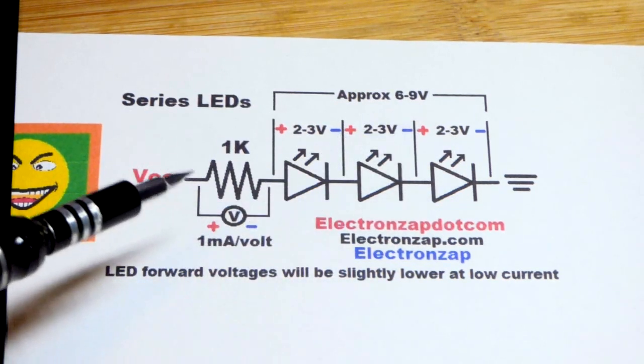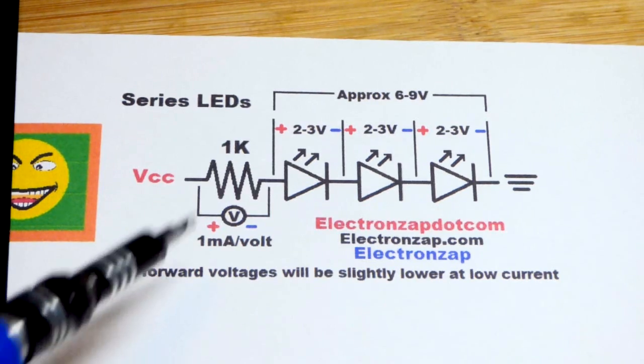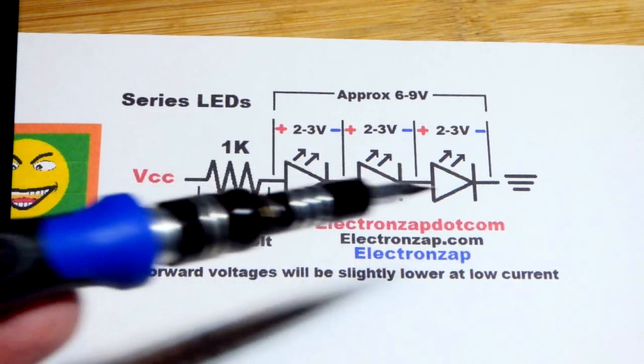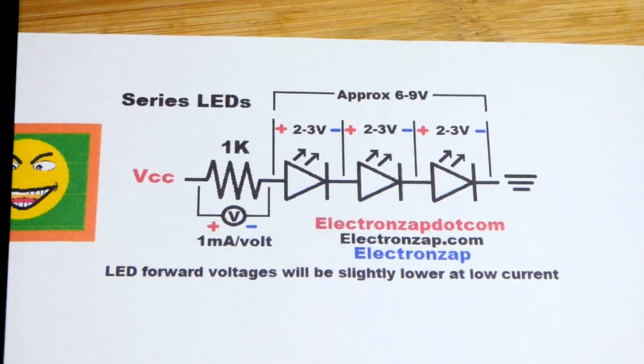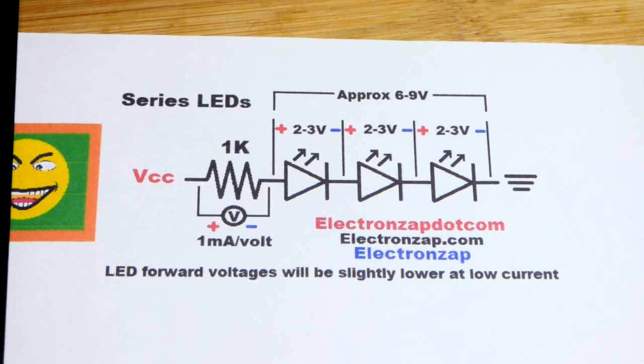And, of course, you still need a current limiting resistor. And you pick that value by how much current you want to go through for whatever voltage is left over going across the resistor. We're going to keep the math simple again and only use the 1 kilohm resistor so that it's 1 milliamp per volt.